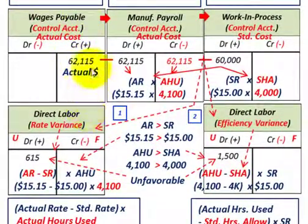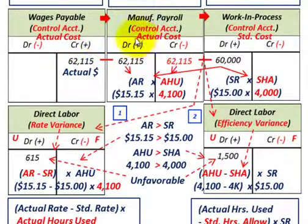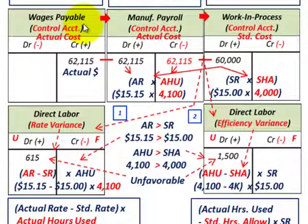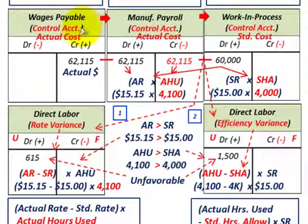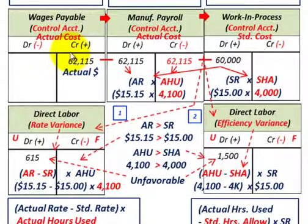What I've got shown here is in t-account form, and we're going to track these labor costs through our different t-accounts. For a conceptual overview: say you're managing a particular manufacturing department or looking at a particular project. We'll start with the case where you're going to accumulate wages payable at their actual cost for that particular department or project.